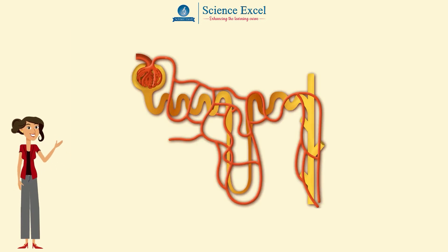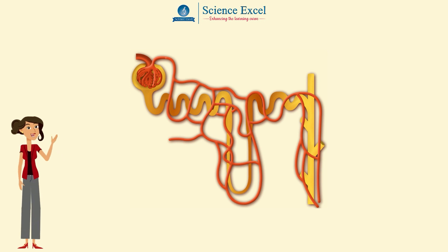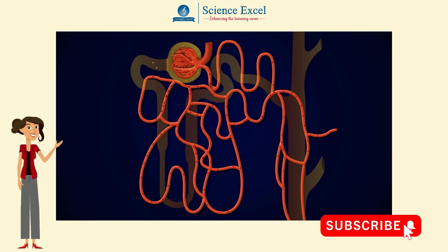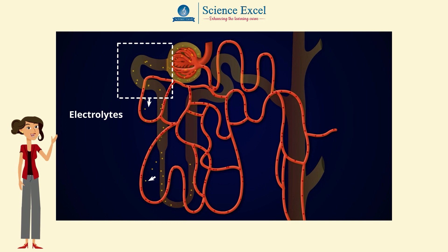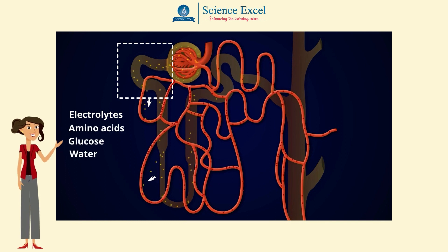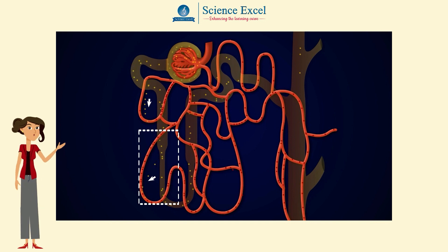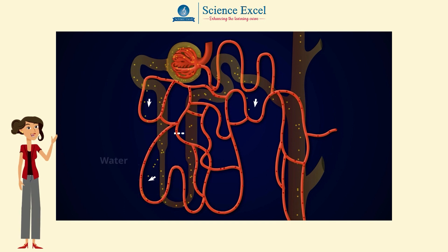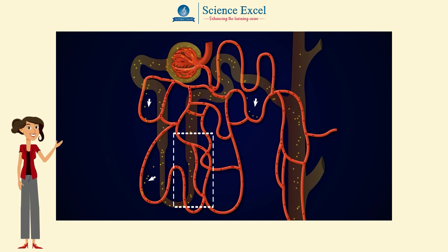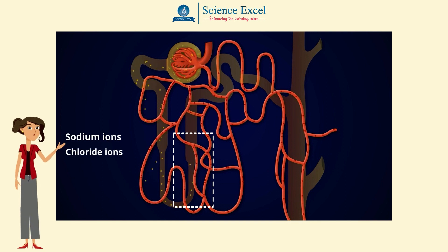Different parts of the tubule bring about reabsorption of different substances, and thus it is selective reabsorption. The majority of reabsorption takes place in the proximal convoluted tubule, which accounts for 70 to 80 percent of electrolytes, amino acids, glucose and water. The descending limb of the loop of Henle helps in reabsorption of only water, while the ascending limb helps in the reabsorption of only ions like sodium and chloride ions.